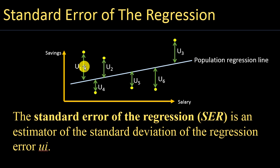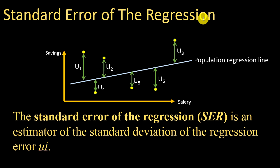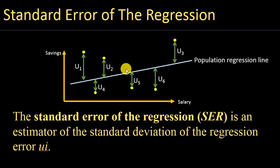I'm showing you just a few data points — this is the error term for this data point, and this is the error term for this data point. When we talk about the standard error of the regression, we are asking how far the errors are from the regression line. If the errors are not far from the regression line, it is a good regression line. But if the errors are quite far away, then the estimate based on the regression is not that good.